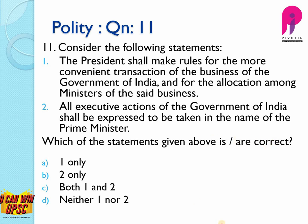Consider the following statements, we have to find out which are true. The president shall make rules for the convenient transaction of the business — yes, this is correct. All executive actions of the government of India shall be expressed to be taken in the name of prime minister — no, it is not the prime minister, it is actually the president. So the answer to this question is A, one only.